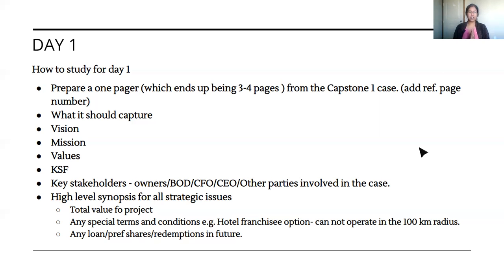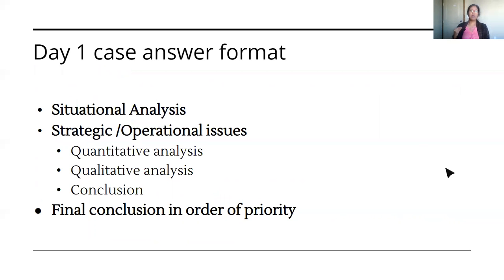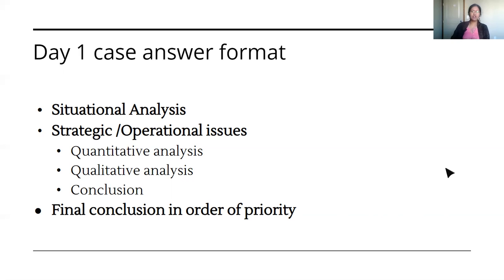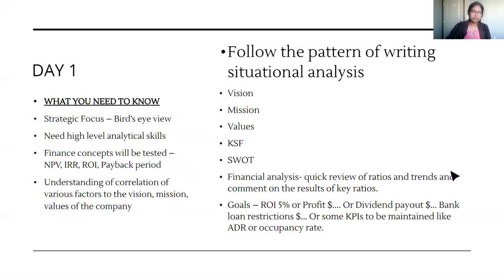That is point number one — make an abridged version of your Capstone 1 case. Next, regarding the Day 1 answer format, which I discussed in detail in the last video: first you write the situational analysis, then for each strategic and operational issue you give pros and cons as your qualitative analysis, followed by a quantitative analysis such as payback period, NPV, or whatever is given. You then integrate that into your final conclusion, linking back to overall goals and situational analysis. After covering all individual issues, you summarize with a final prioritized conclusion.